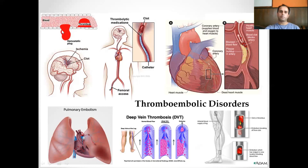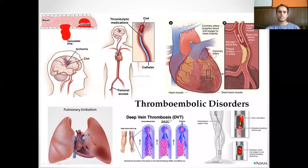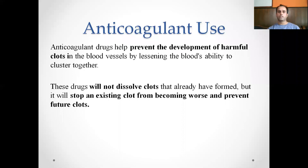Upon injury, a hemostatic plug forms, but a thrombus can also form inside the blood vessel. When this thrombus becomes dislodged, it can travel to any part of the body causing stroke, pulmonary embolism, myocardial infarction, or deep vein thrombosis. Anticoagulant drugs prevent the development of harmful clots by lessening the blood's ability to clot, but they do not dissolve already-formed clots — for that, thrombolytic or fibrinolytic drugs are needed.